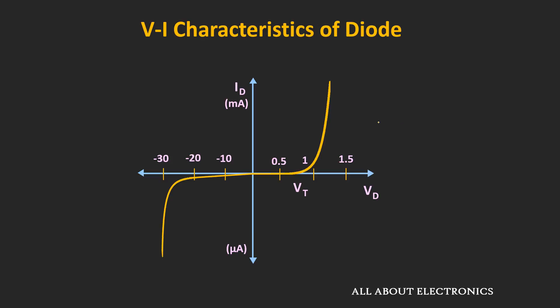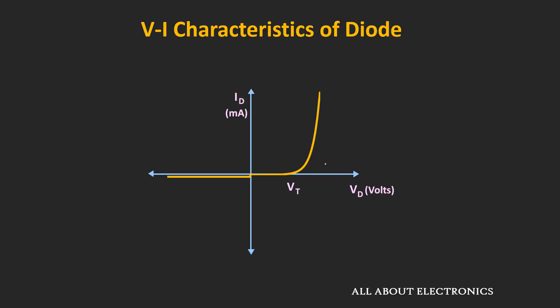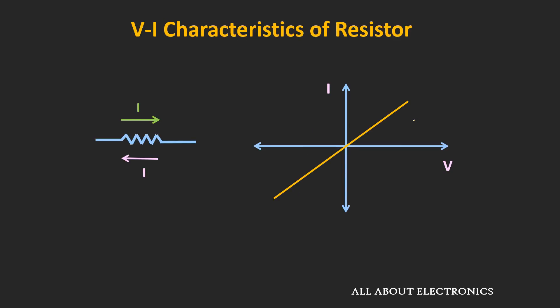The VI characteristic of the actual diode looks like this. In this characteristic curve, both positive and negative axes have different scales. But if both axes have the same scale, the curve will look like this. As you can see, the diode allows the flow of current only in one direction, while it almost blocks the current in the reverse direction. The relationship between voltage and current is non-linear, whereas a resistor has a linear relationship.